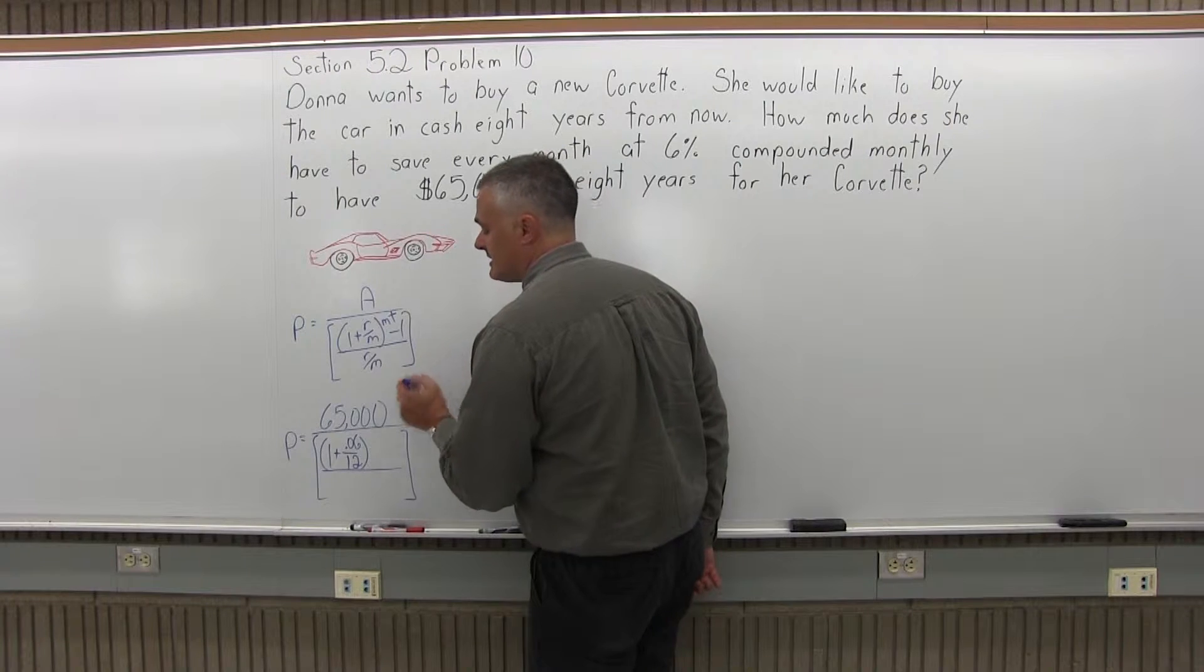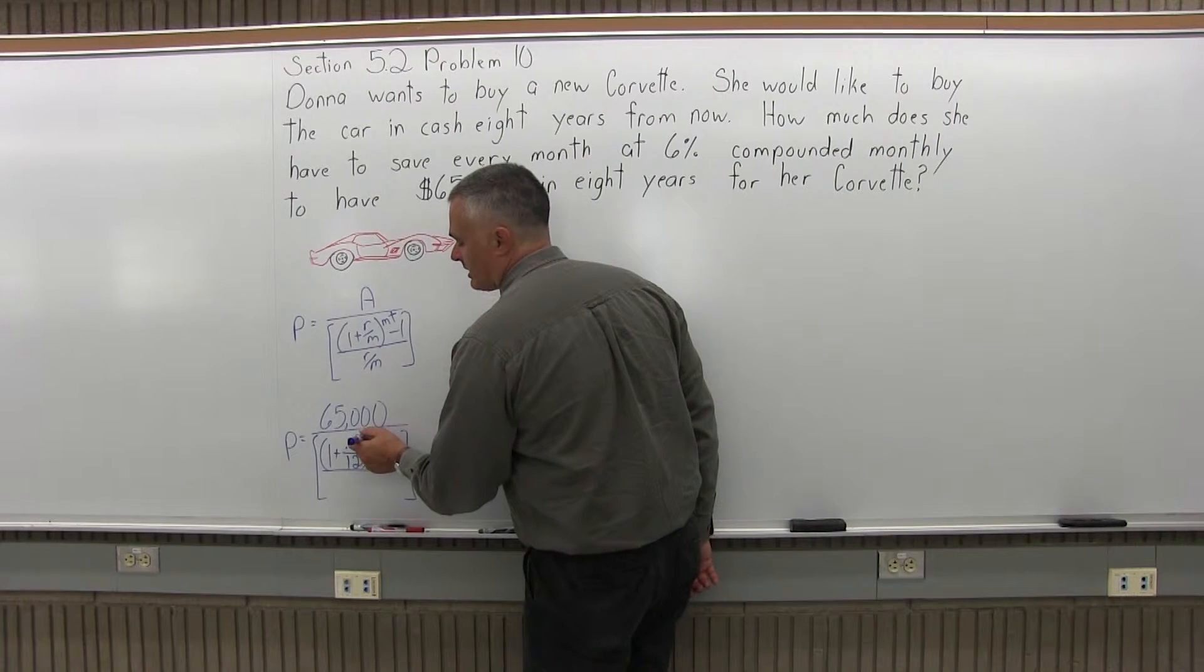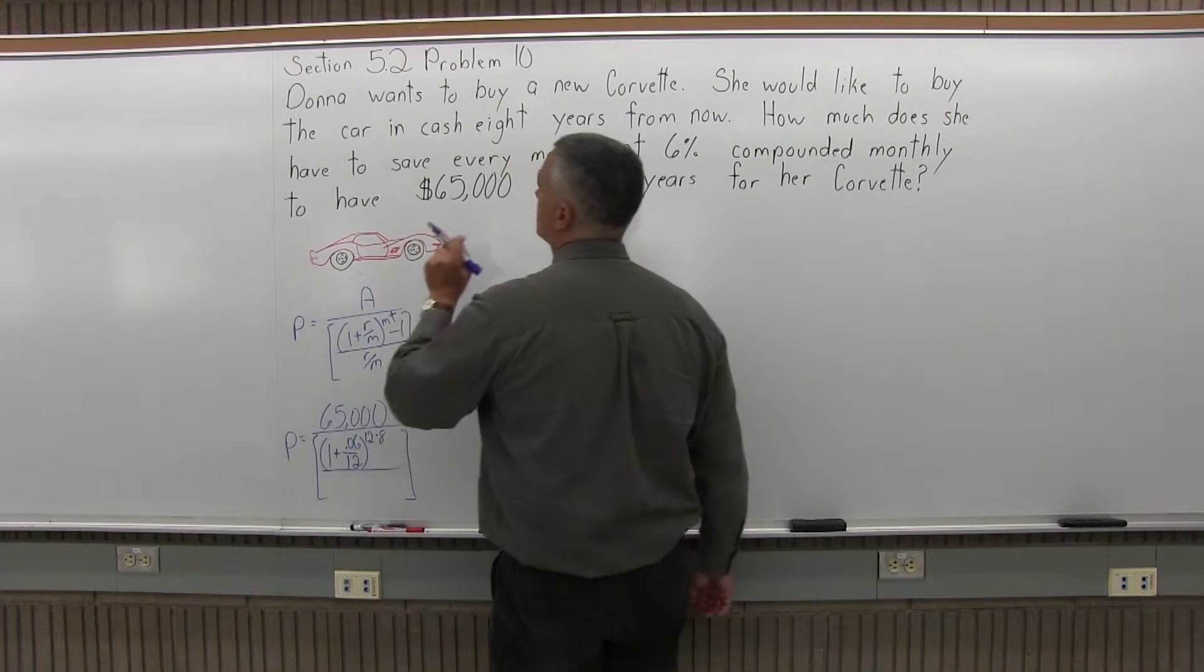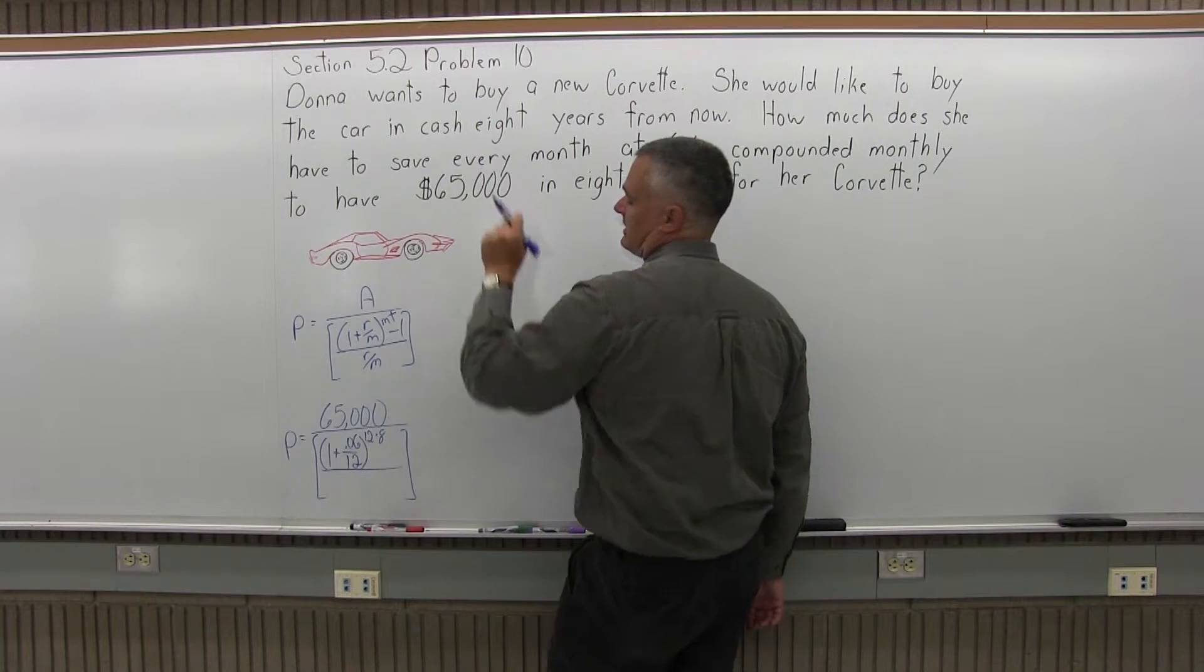And I close my parentheses. The parentheses have an exponent of M times T. M is 12 for monthly compounding, and the T, the time is 8, eight years because that's what the problem says.